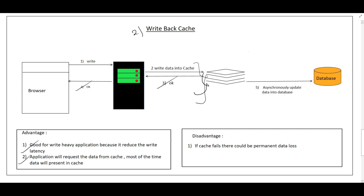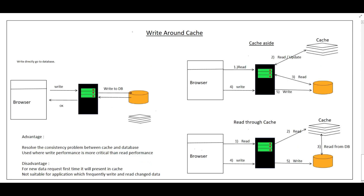The disadvantage of Write Back Cache: if some data is written to the cache and the cache goes down before that data has been synced to the database, that data will be permanently lost.